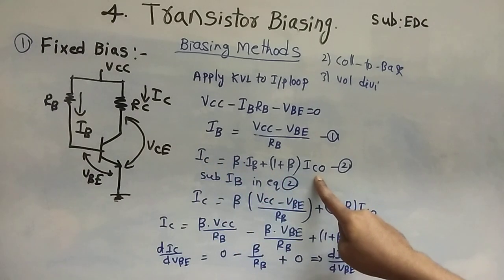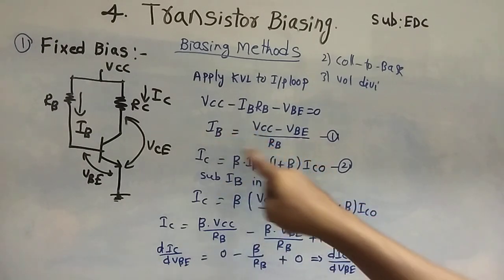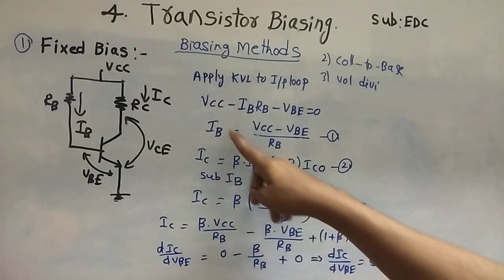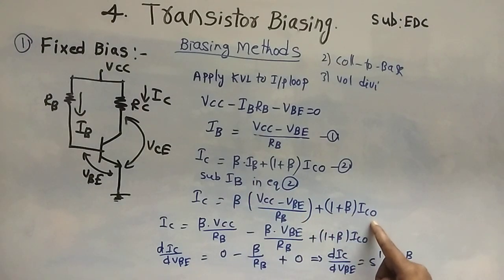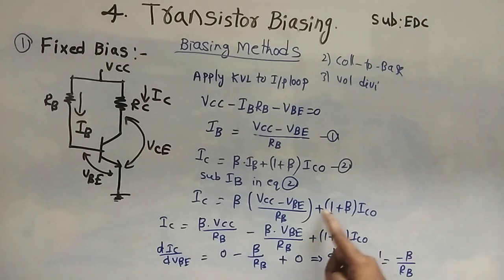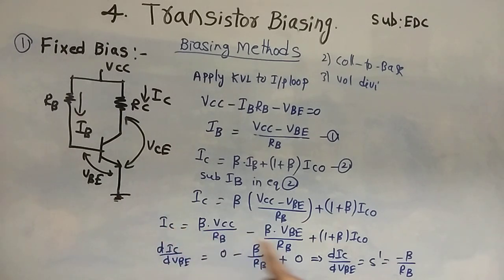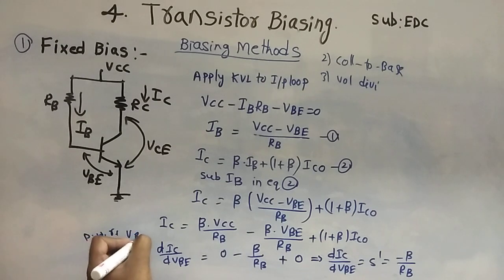Expanding: IC equals (beta times VCC)/RB minus (beta times VBE)/RB plus (1 plus beta) times ICO. To find S dash, we differentiate IC with respect to VBE. S dash equals delta IC divided by delta VBE. Differentiating the above equation with respect to VBE: the first term (beta·VCC/RB) is constant so its derivative is zero.